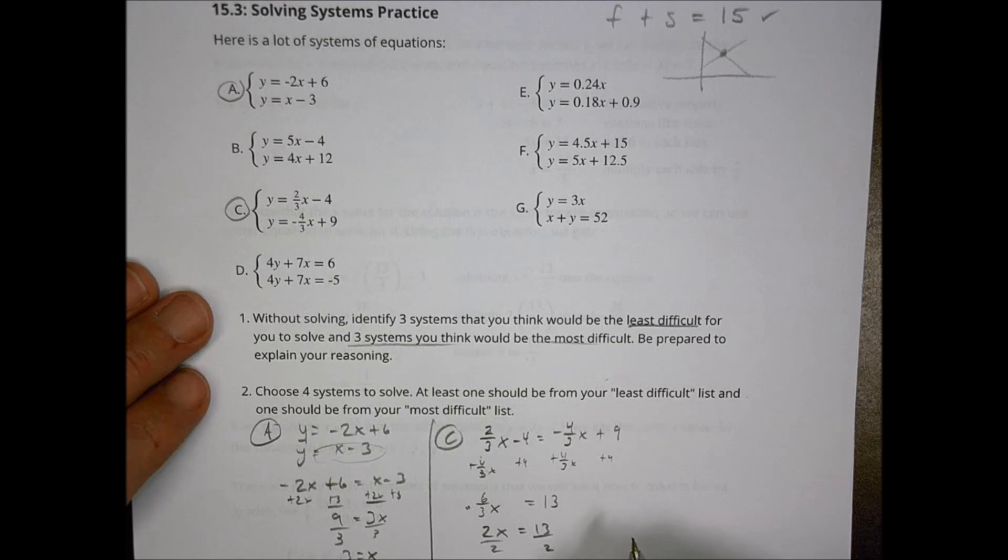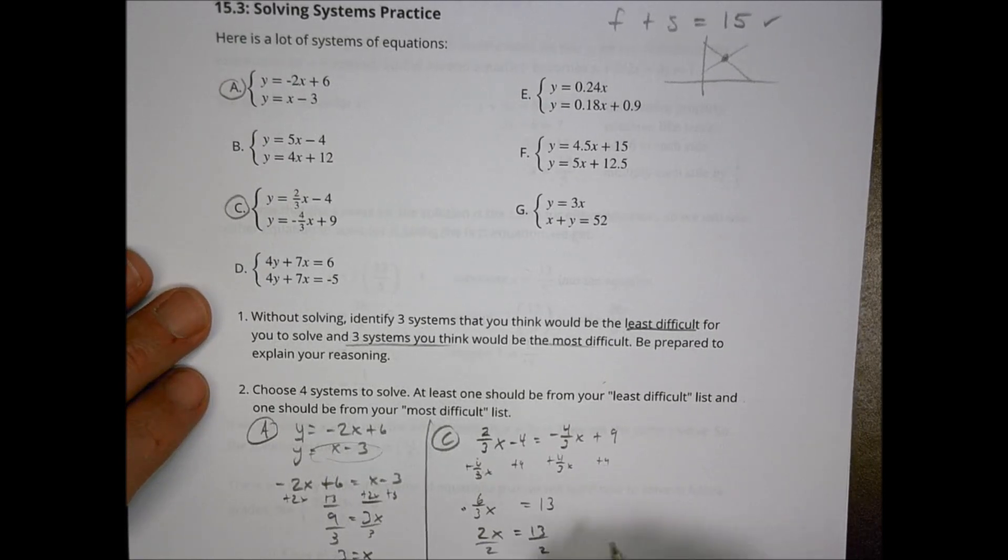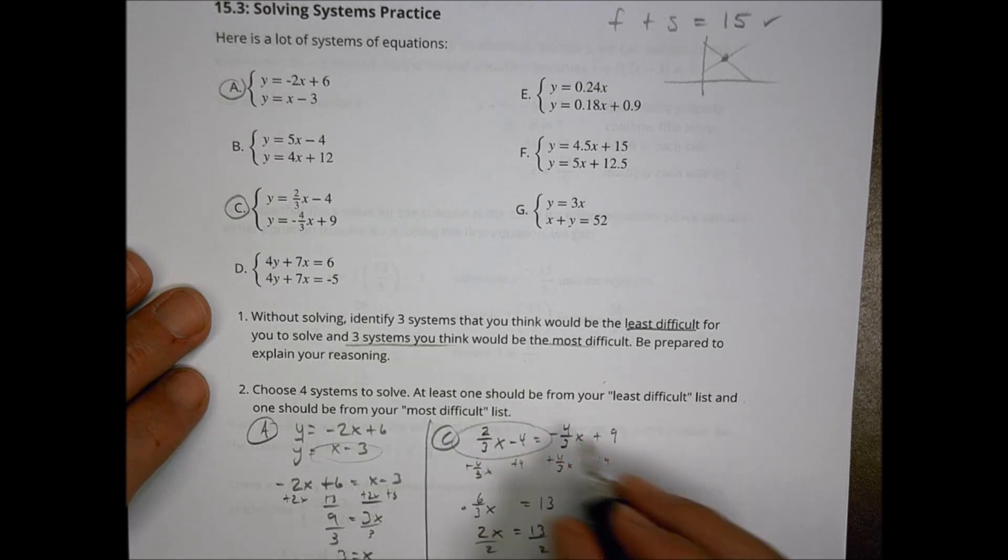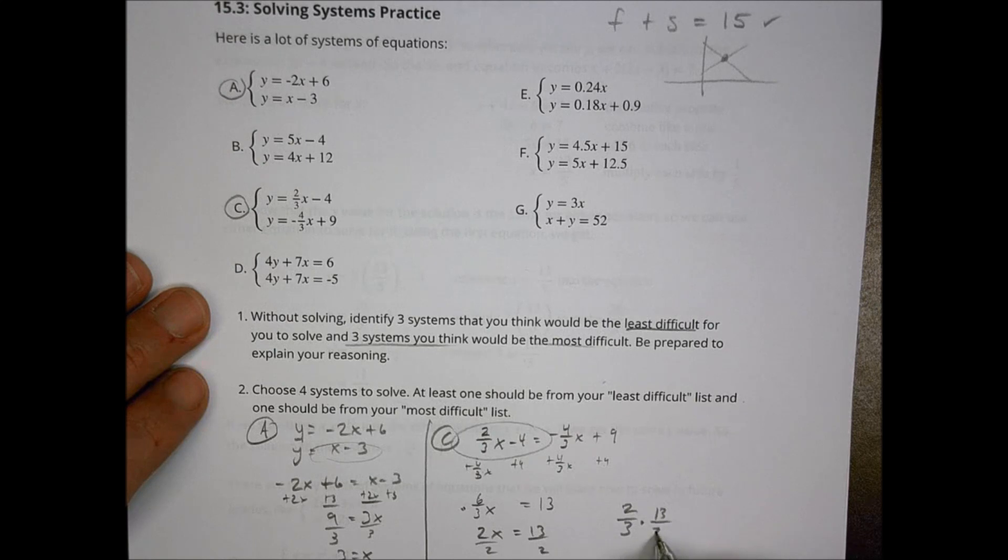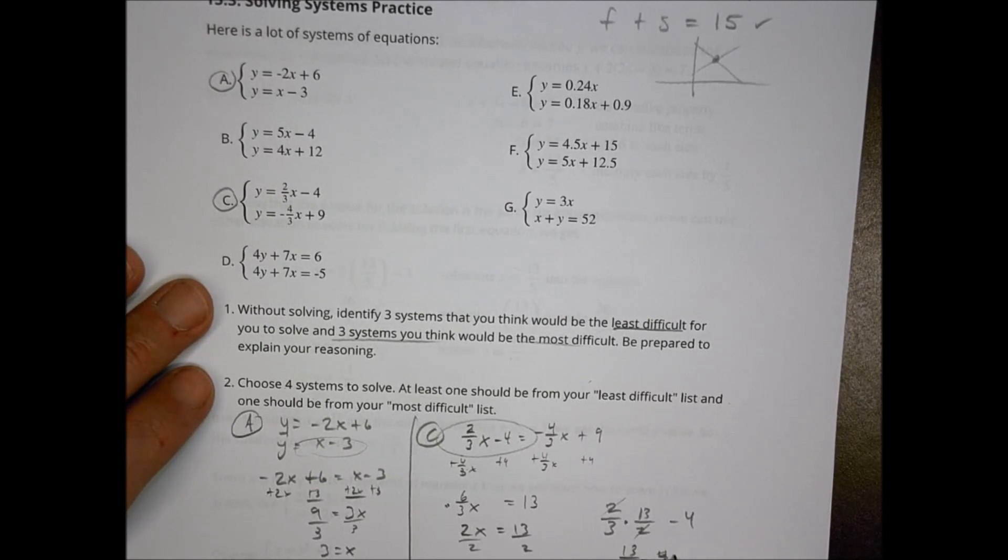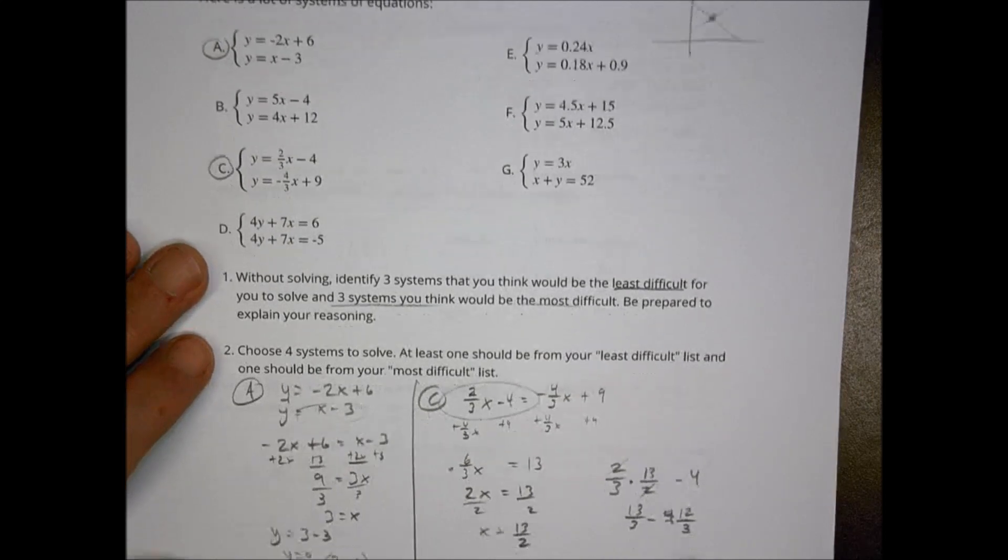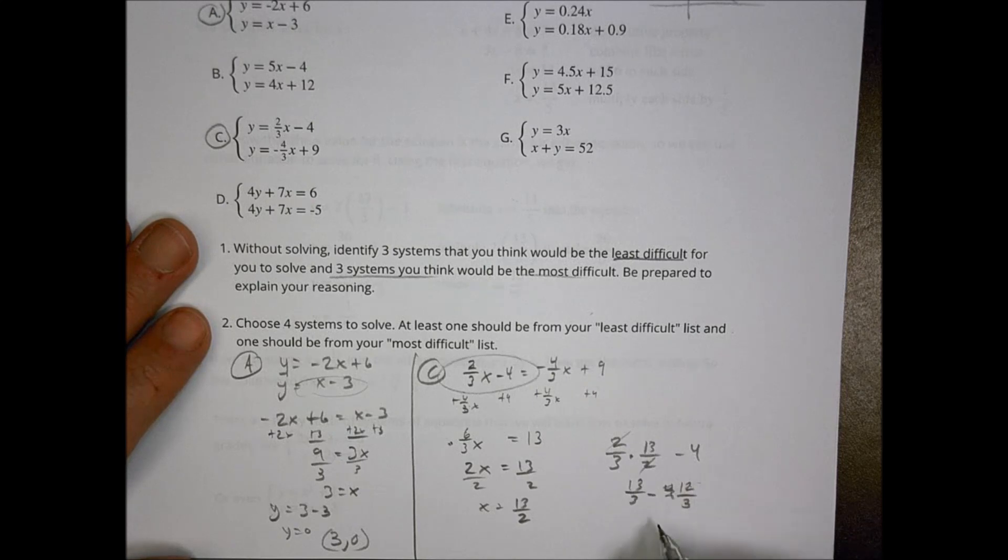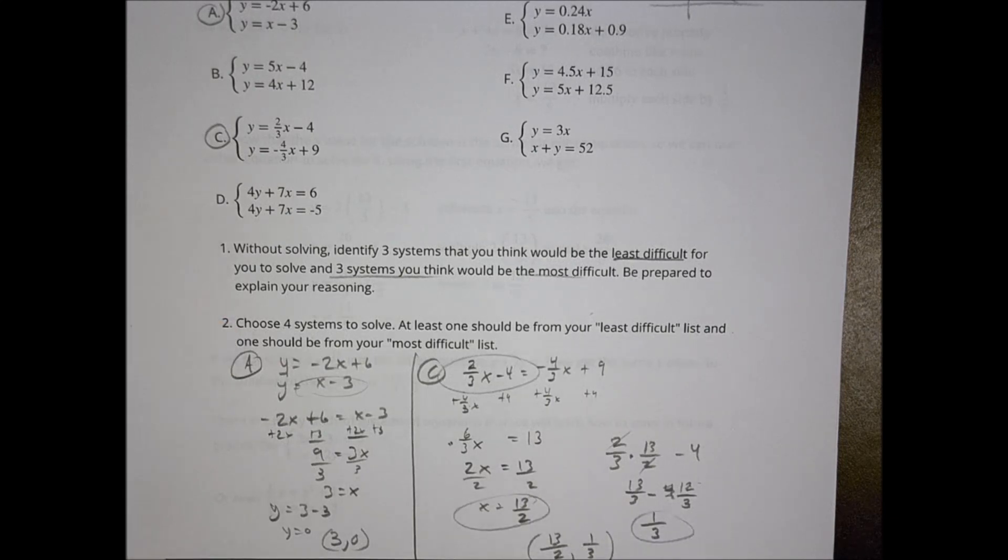Now I can use that to plug it back into one of my equations. Let's use this one right there. So 2 thirds times 13 over 2 minus 4. 2's go away, and I have 13 thirds minus 4. I can turn that into a common denominator by turning the 4 into 12 thirds. So 13 minus 12 is 1, and keep the denominator the same, so I have 1 third. So my point becomes 13 over 2 comma 1 third. That's my X value and my Y value right there. So that's what I would do to solve that out there for you, and that's kind of what today's lesson is about.